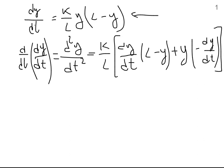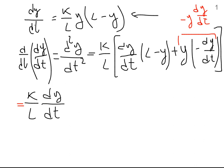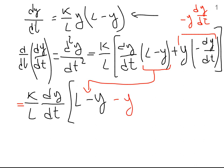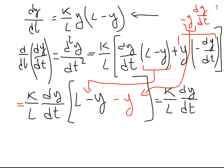Ok, so how can we continue? One thing is to group the common terms. This term is equal to minus y dy over dt. So I can factor out kl, which is already outside the brackets, and then dy over dt. And if I do this, I'm left with l minus y — that is this part — minus y — that is this one. So this is equal to k over l times dy over dt times l minus y.